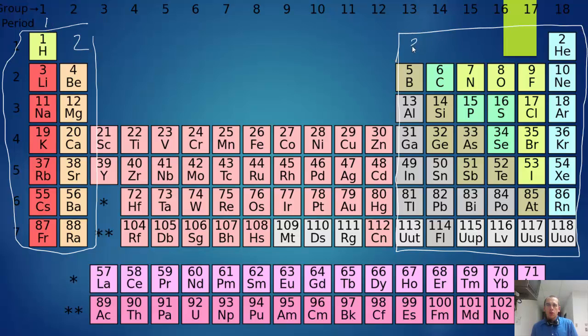1, 2, 3, 4, 5, 6, 7, 8. If it's in column 1, it's got 1 valence electron. If it's in column 2, it has 2 valence electrons. Skip to 10 in the middle. 3 valence electrons, 4 valence electrons, 5, 6, 7, 8 valence electrons. Except remember helium only has 2. So we look at the periodic table and we know how many valence electrons it has.